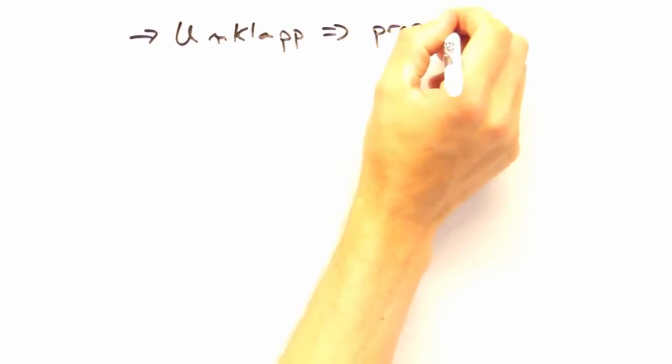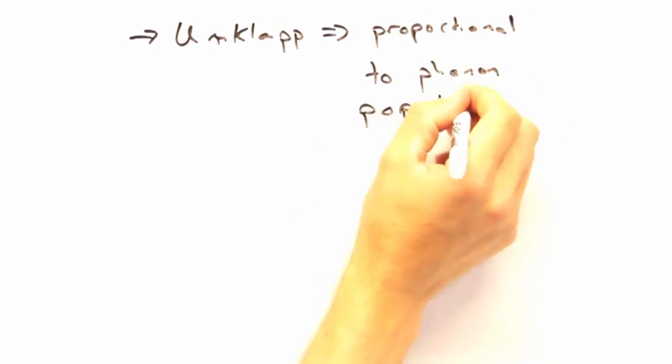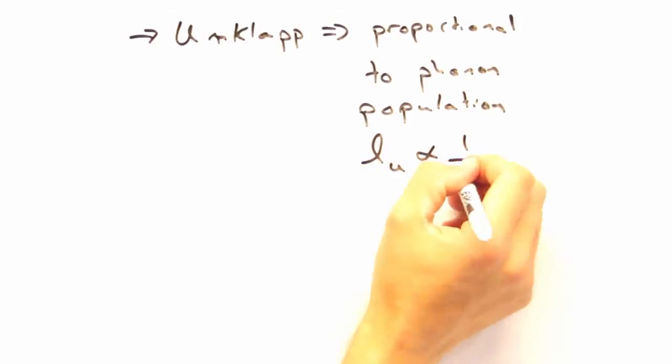Well, that would depend on temperature, right? Because at high temperatures, I would expect that there are so many phonons that Umklapp scattering is going to be the dominant contributor. And since this effect depends on phonon population, I'd expect L from Umklapp scattering to go roughly inversely with T.